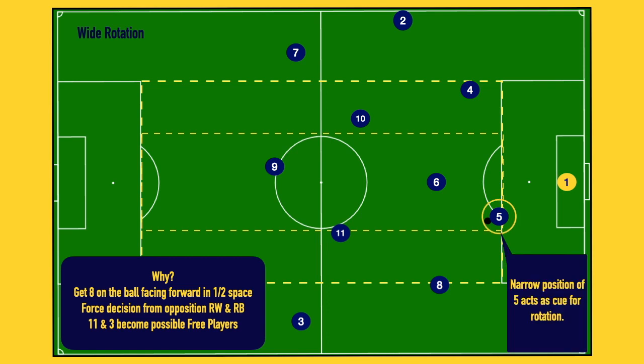The important thing here is looking at the different position of the five. The cue for this rotation to take place is that our five has come a little bit more narrow to pick up the ball from the four. Sometimes it'll be our one, or whatever it may be, but in this case the five slid over a little bit more central than usual, gets on the ball, and that creates the space for that rotation to happen.